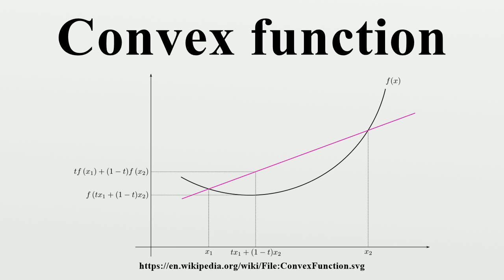Any local minimum of a convex function is also a global minimum. A strictly convex function will have at most one global minimum. For a convex function f, the sublevel sets {x : f(x) < a} and {x : f(x) ≤ a} are convex sets. However, a function whose sublevel sets are convex sets may fail to be a convex function. A function whose sublevel sets are convex is called a quasi-convex function.